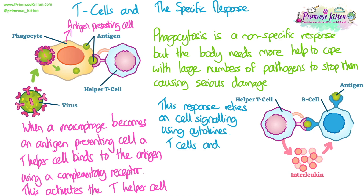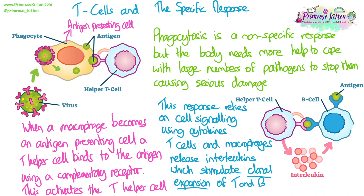The specific response is controlled by cell signalling molecules called cytokines. T cells and macrophages both release a type of cytokine called interleukins, which stimulate the clonal expansion of both T and B cells. T cells and B cells divide rapidly by mitosis to make many copies, ensuring there are large numbers present in the blood and lymph to bind to antigens and drive the next stage of the specific response.